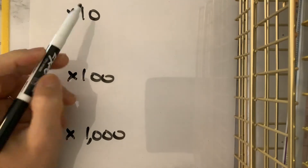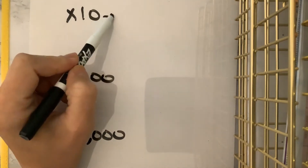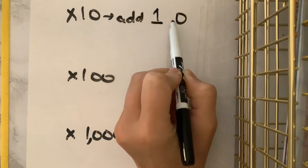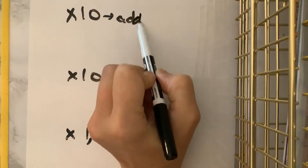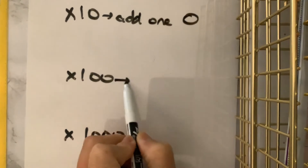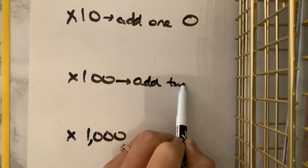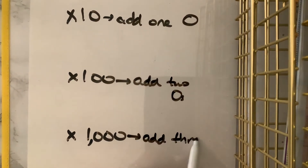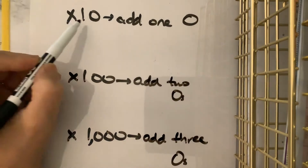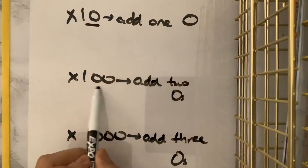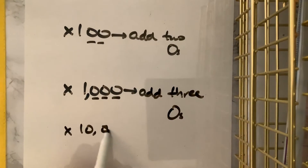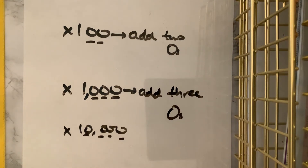So for instance, if you're multiplying by ten, you're really just going to add one zero. If you're multiplying by a hundred, you're going to add two zeros. If you're going to multiply by a thousand, you want to add three zeros, and really that's going to continue to be the case — one, one; two, two; three, three. If we multiplied by ten thousand, you can probably guess we would add four zeros, and so on and so forth.